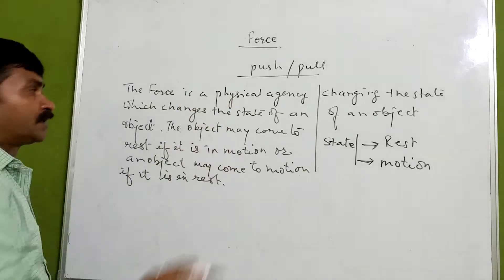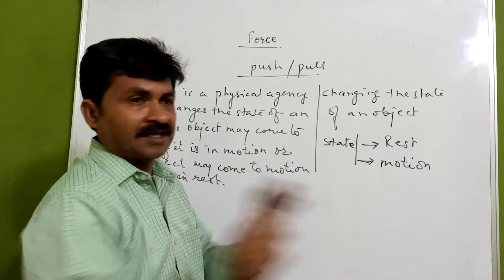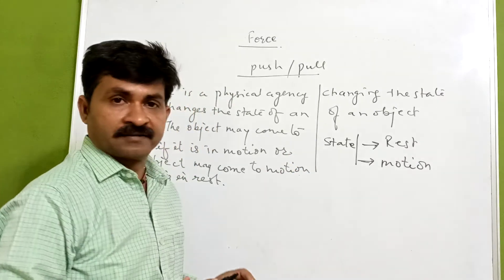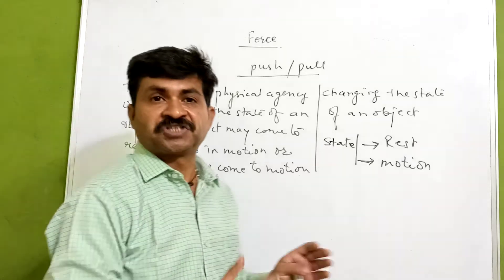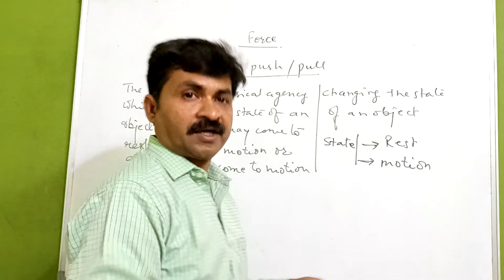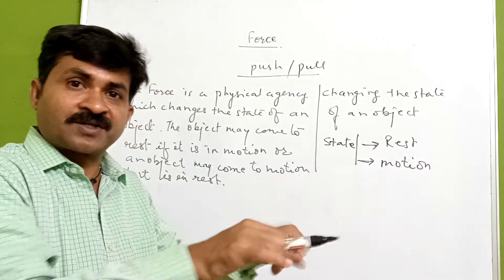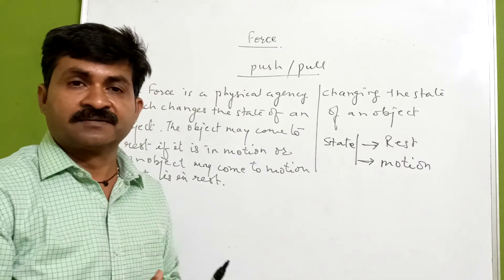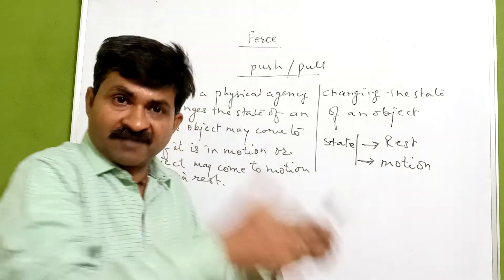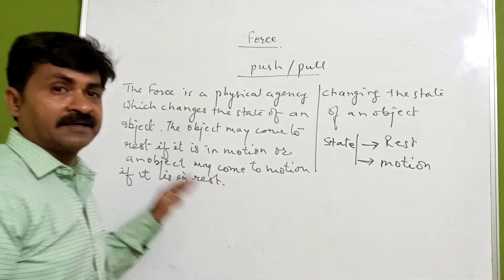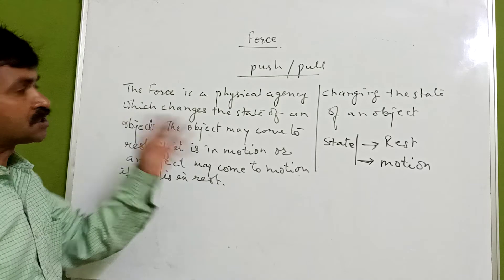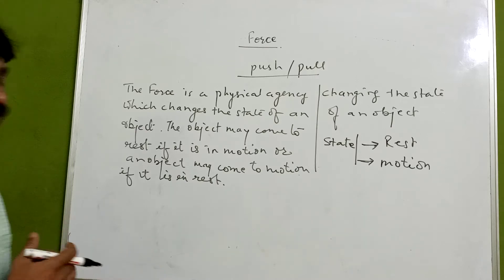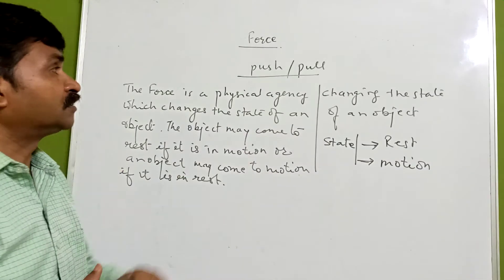So simply pushing or pulling gives us the idea that we are changing the state of an object. If you are cycling and using the pedal, you are changing the state from rest to motion. When you apply a brake, it comes to rest again — you are applying a force. When riding on the cycle and pushing the pedal, you are applying a force. So we can simply define force as the physical agency which changes the state of an object — it may come to rest or it may come to motion.